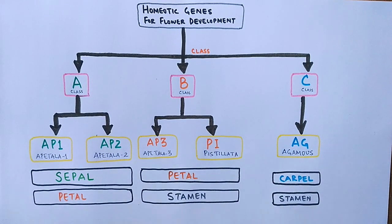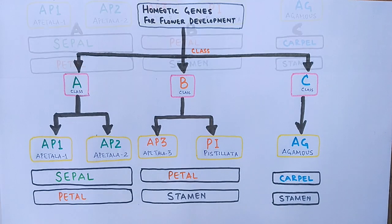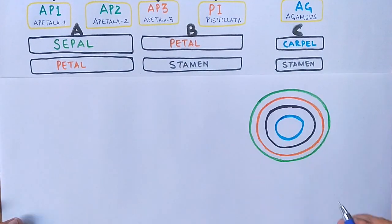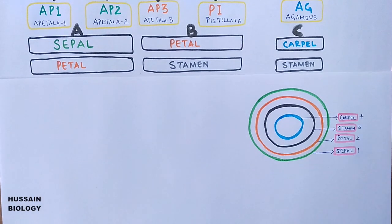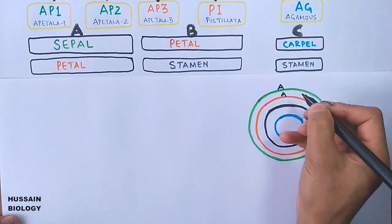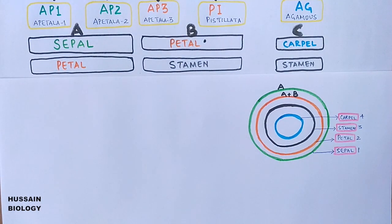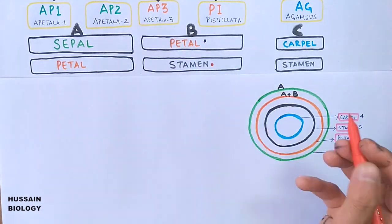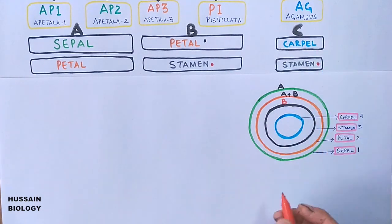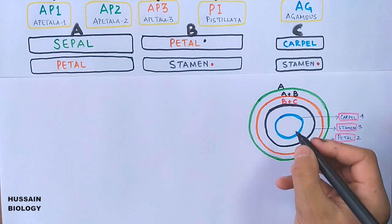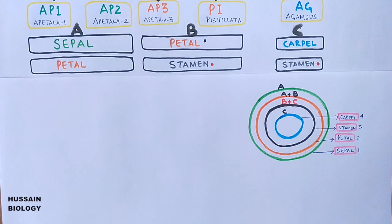Using the concentric floral diagram to understand gene contributions: A class genes alone contribute to sepal development. For petal development, both A and B class genes interact together. For stamen development, B class and C class genes (B plus C) work together. For carpel development, the C class gene — AGAMOUS — acts alone.